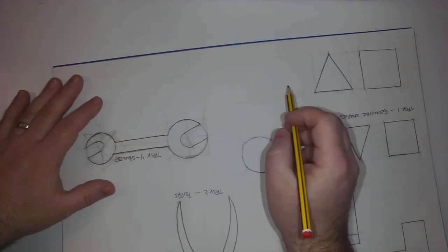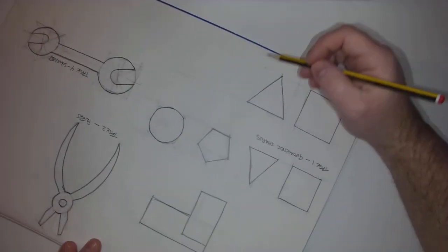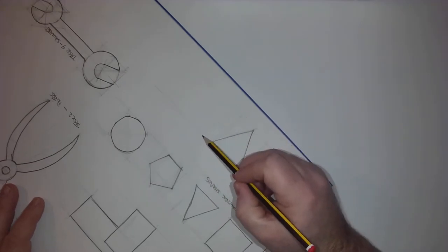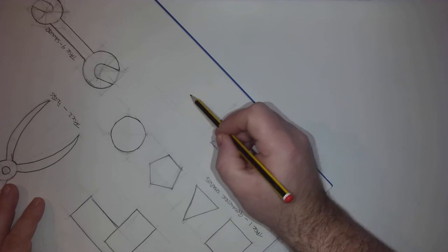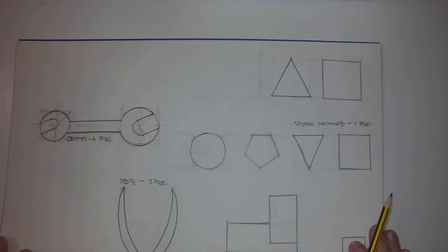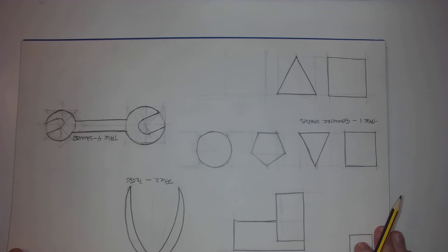Moving on to the pentagon. Again, I'm using a square as the starting point, so changing my pencil grip back to being light. Start off with something that's approximately a square.